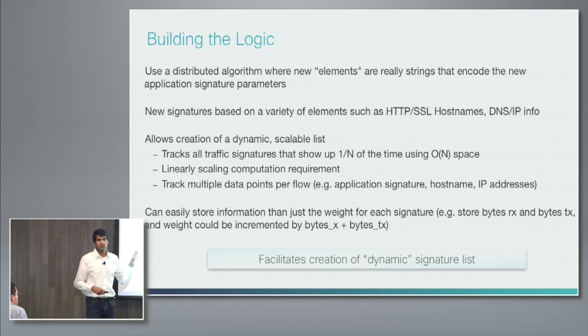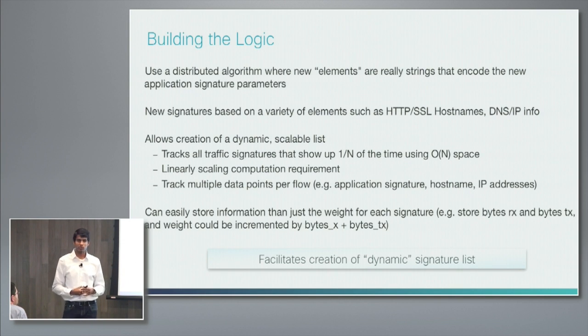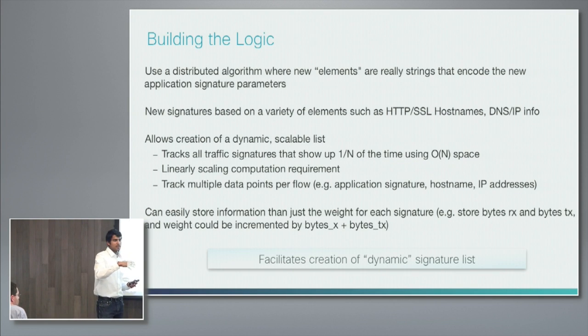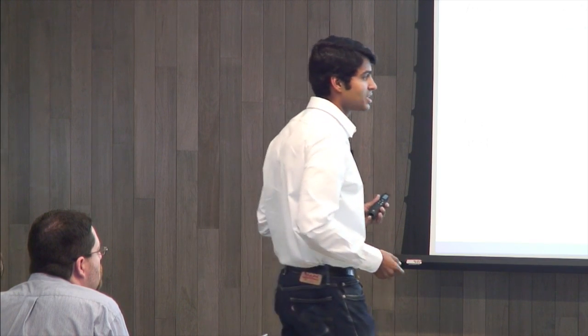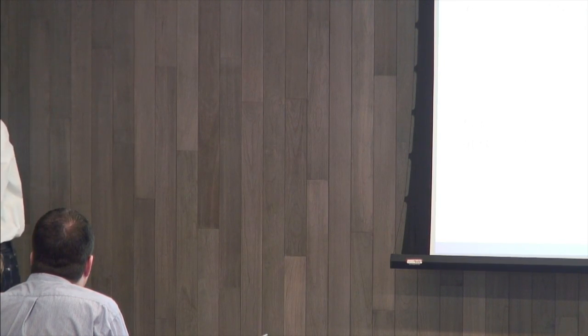This is a little different from how the traditional application classification process works. The traditional process analyzes the traffic flow and builds heuristics so it can catch that traffic flow in the future — but this is notoriously difficult and requires a dedicated team to continually play catch-up as more apps and signatures are added. BitTorrent itself is notoriously difficult to classify because it's using different ports and different IP addresses. Instead of playing catch-up, we wanted to create this dynamic scaling engine.